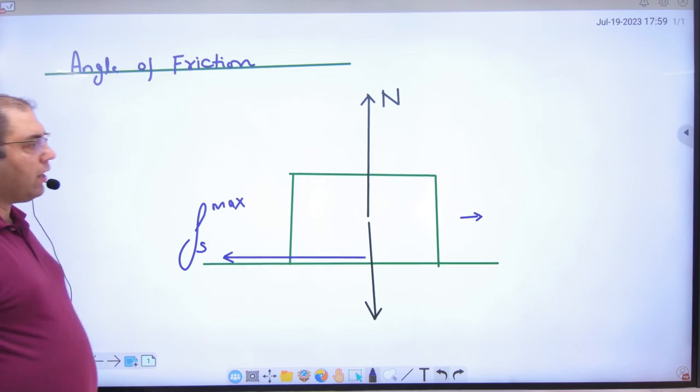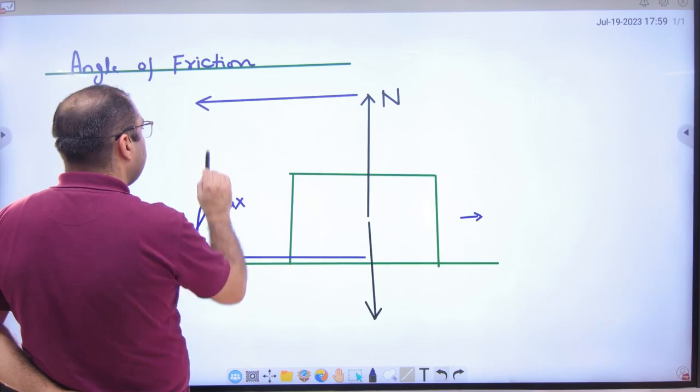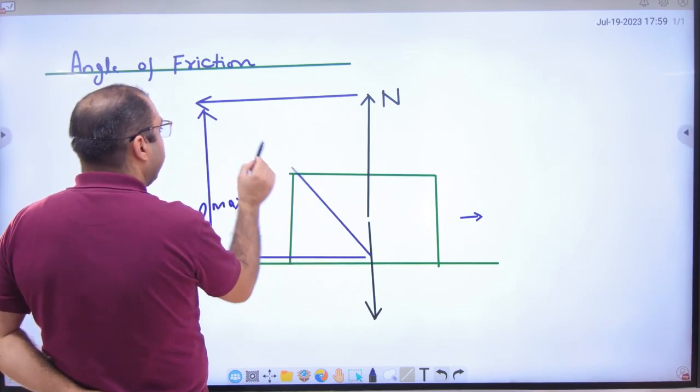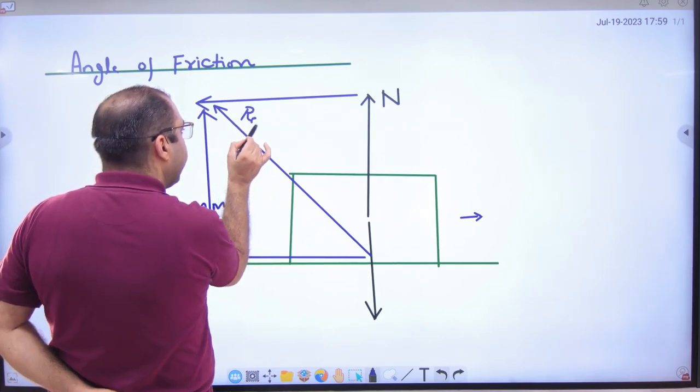Now, if I say that net contact force is enough, what will we draw? Parallelogram. And this will be net contact force. Can I say that this resultant will come?